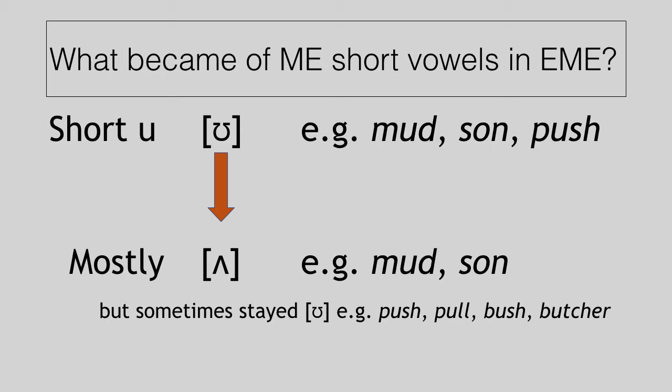But some of those short U words stayed at an [ʊ]. So you have words like push and pull and bush and butcher, which kept the [ʊ] there. We don't say butcher, we say butcher. And so there's actually a phonological conditioning. As you can see, these words begin with a labial and there's certain consonants that come after them. Details aren't important. The point is that some of them kept the [ʊ] sound, which is why we have that sound today, whereas the majority of them became an [ʌ] sound, as in mud and sun.